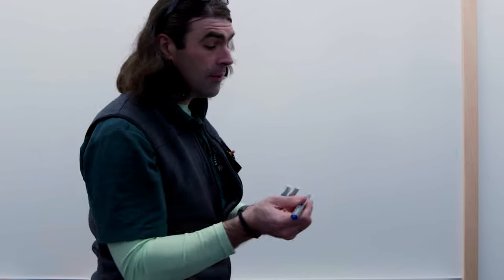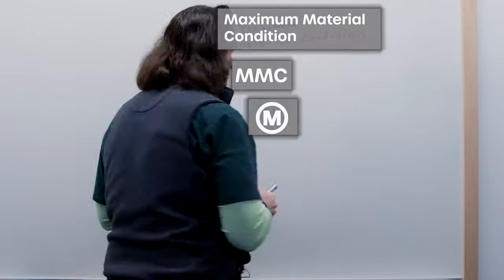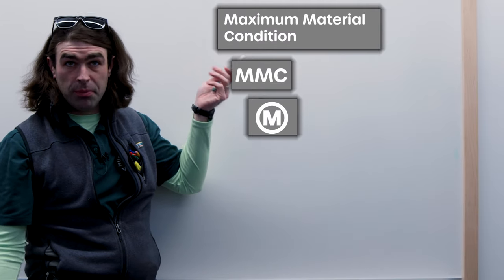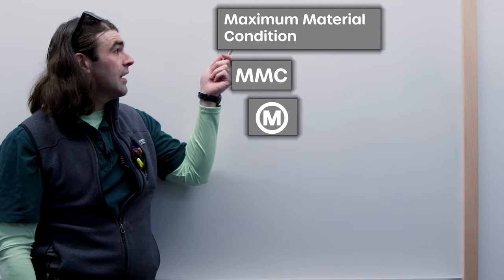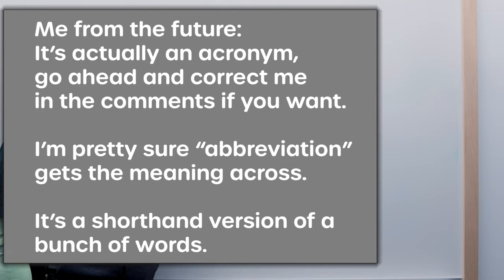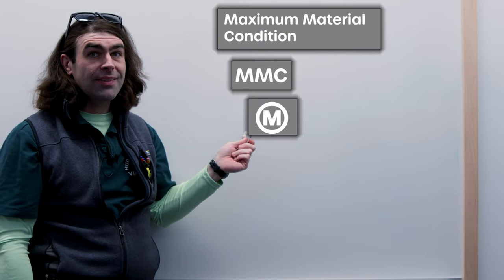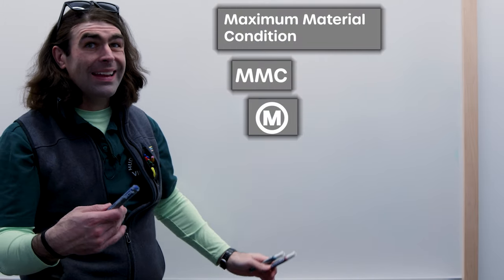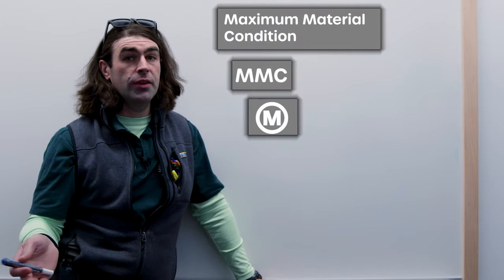You'll see it three different ways. You might see it fully written out - Maximum material condition. You might see it as an abbreviation MMC, or you might see it as a symbol. It depends where it is on the drawing.